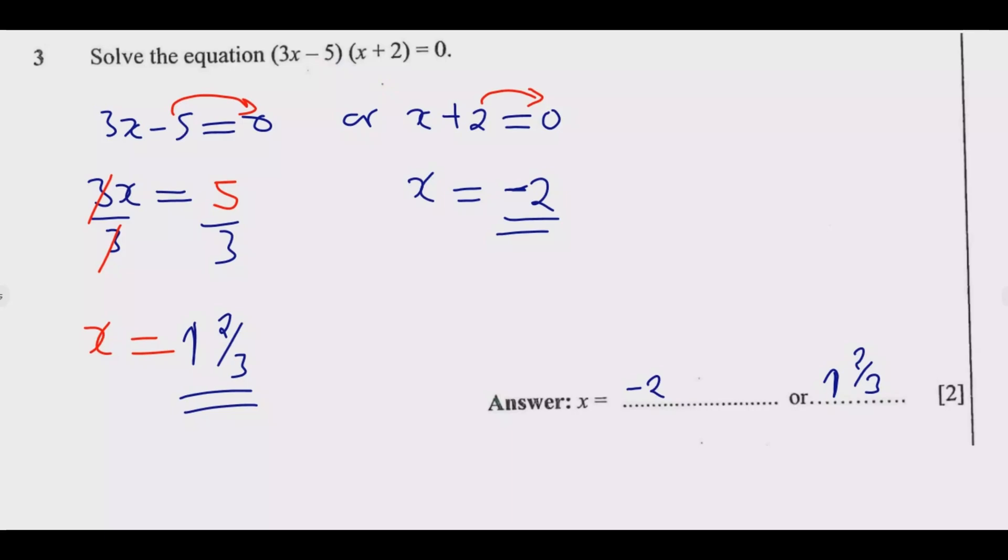When x equals negative 2, negative 2 plus 2 is 0, and 0 times anything is 0. Similarly, when I put 5/3, which is the same as 1 2/3, it will be 3 times 5/3. You're going to get a 5. 5 minus 5 is 0. So you notice that this answer is correct. So once you do that, you're good to go. You get these two marks just as easy as that.